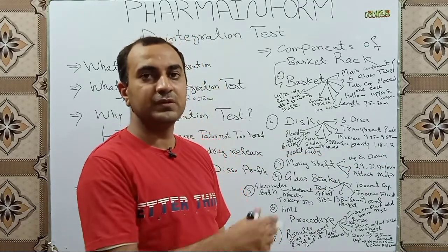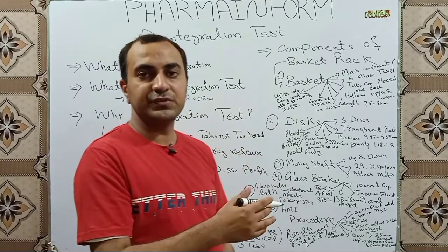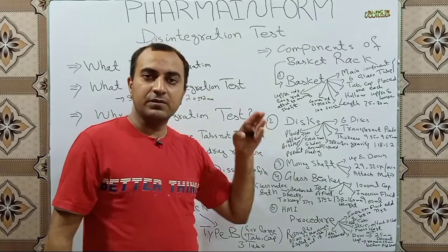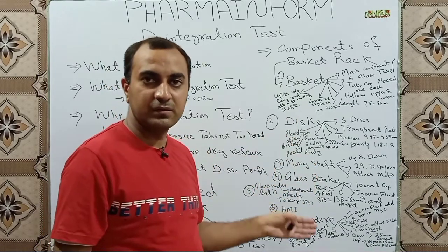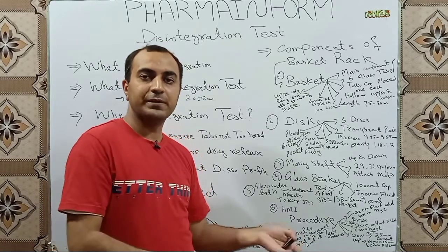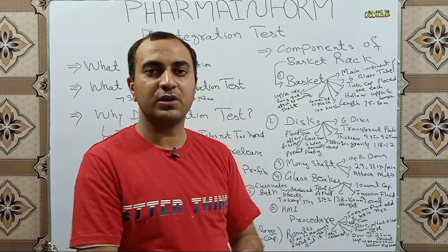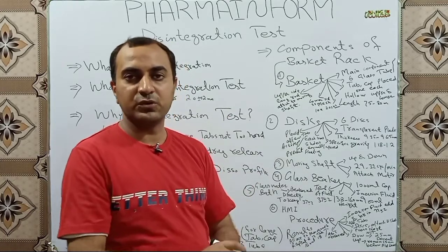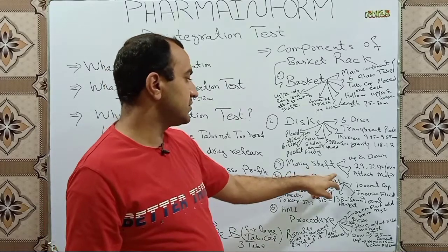Each disc has five holes, and each hole is equally spaced from the others. After placing tablets or capsules in the glass tube, the disc is placed over them to prevent the tablets or capsules from floating. One important note: the use of discs is dependent on the specifications of the monograph. If it is required by the monograph, we use these discs; if not, we do not use them.